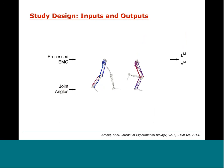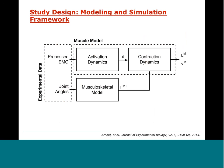This slide shows Edith's simulation framework. The inputs are the experimental data. We use activation dynamics modeling to go from measured EMG to activation, then contraction dynamics. This takes activation plus muscle-tendon states from the musculoskeletal model and uses these inputs to calculate muscle forces along with lengths and velocities, which is Edith's output of interest. Edith's question is how walking and running impact force-generating capacity, so understanding how the contraction dynamics piece works is key.